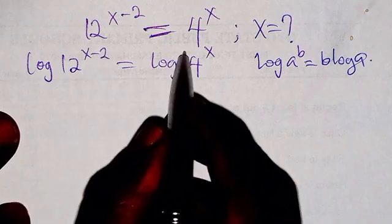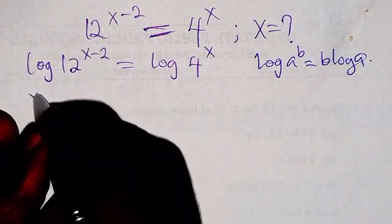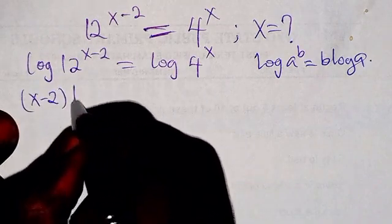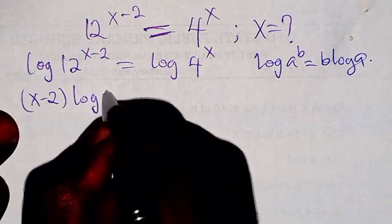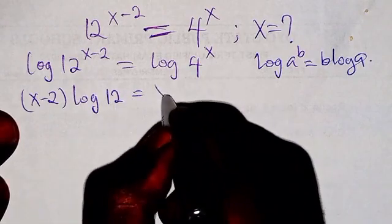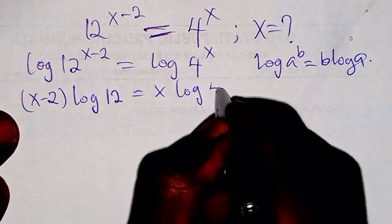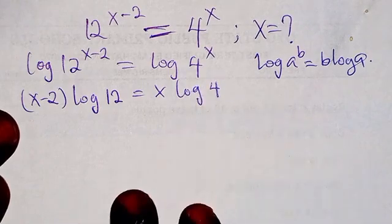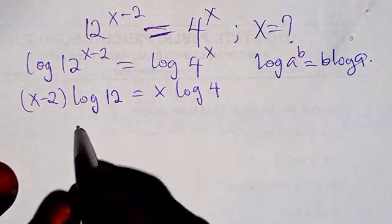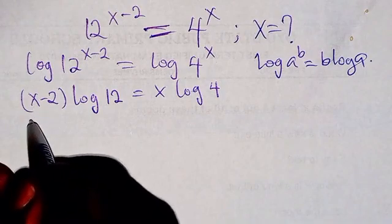We take all the powers to the back: x minus 2 multiplying log 12 equals x log 4. Are you following?